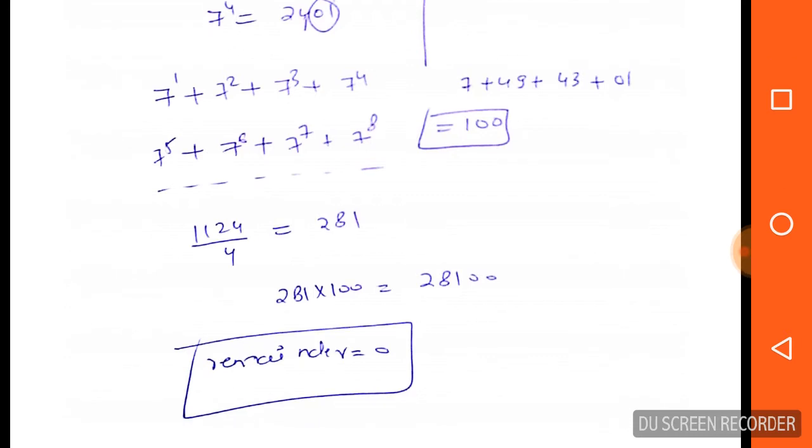So what will be the last in total? If there are two zeros in the last, then when we divide it by 100, it will be zero remainder. If there are two zeros in the last, you will get the remainder as zero.